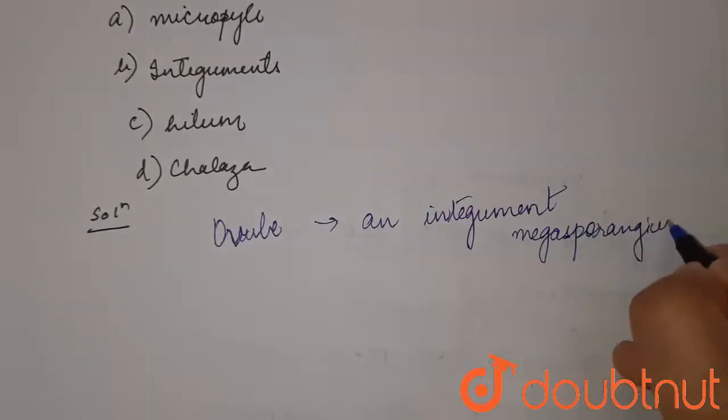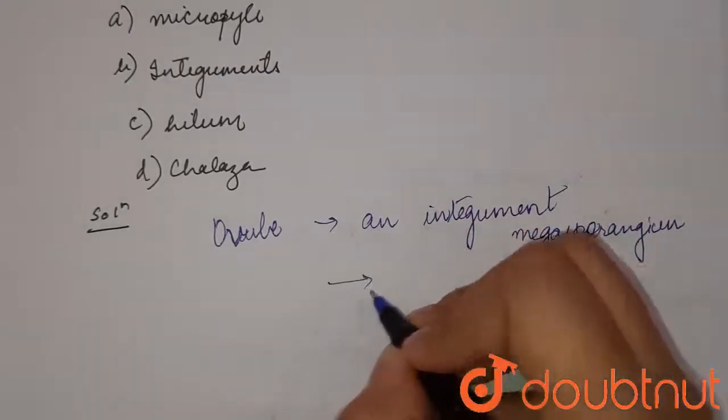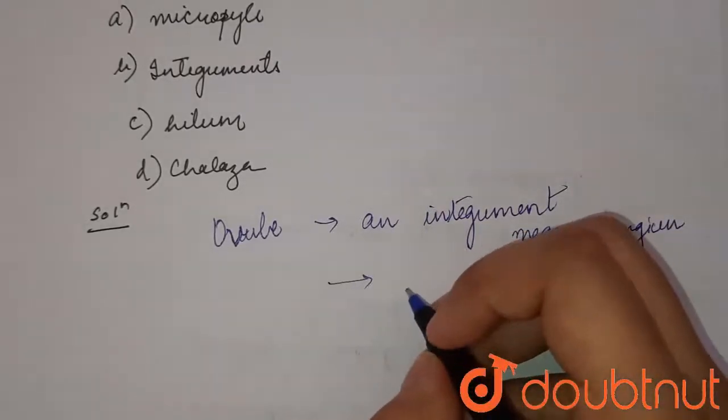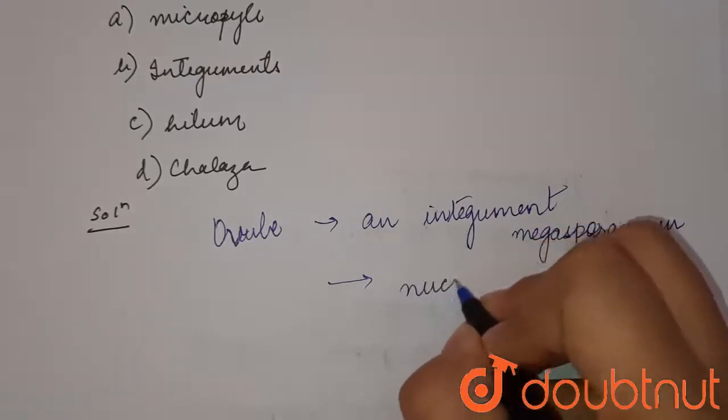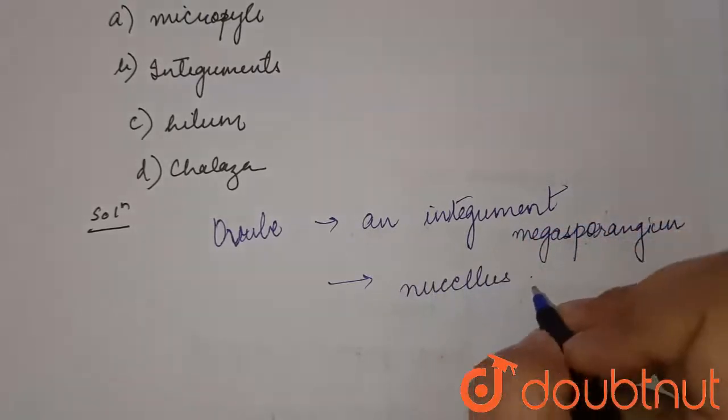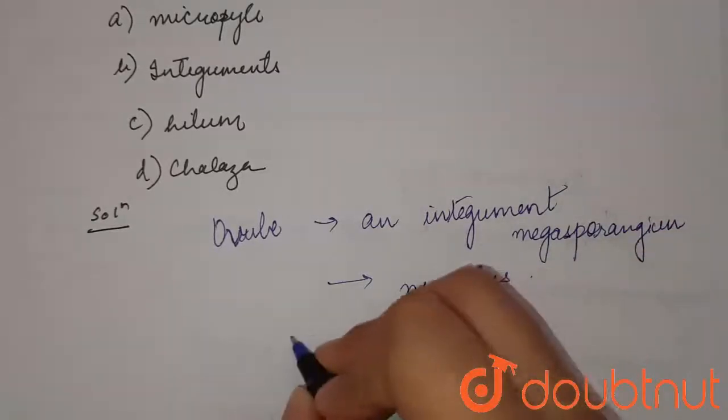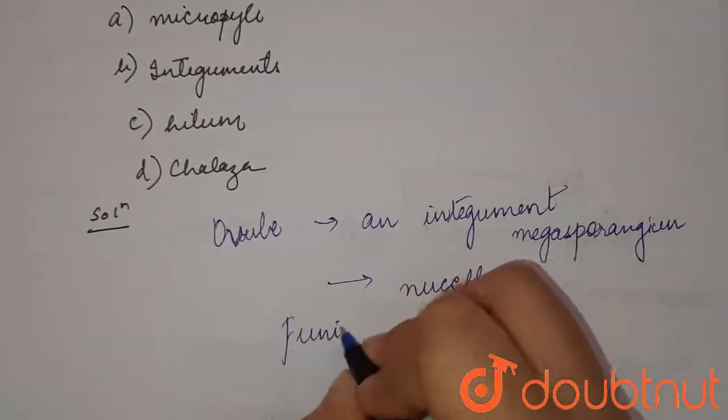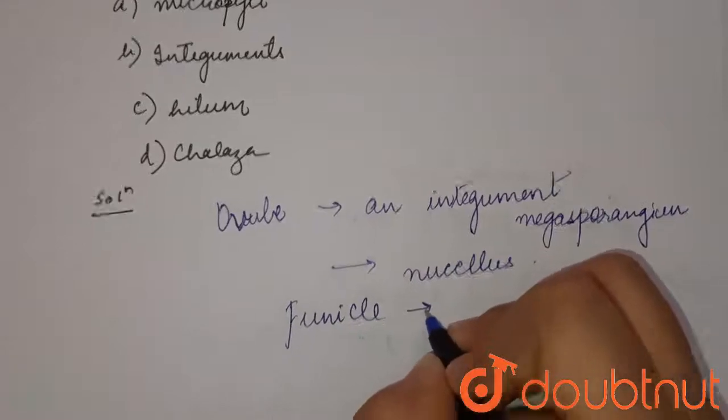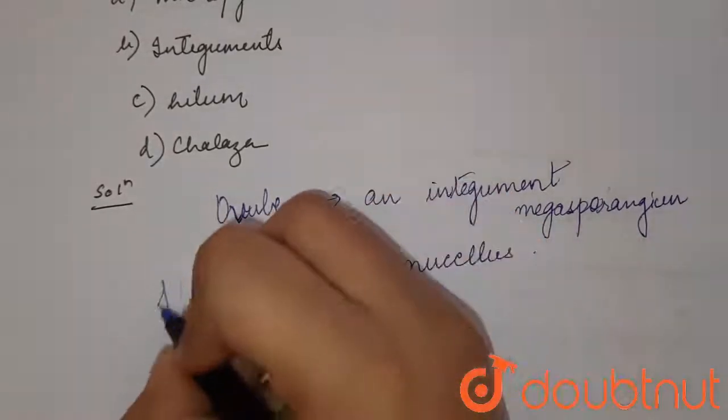Mega sporengium consists of nucellus invested by two or more integuments, and funicle consists of nucellus. So the funicle is attached to the ovule and to the placenta.